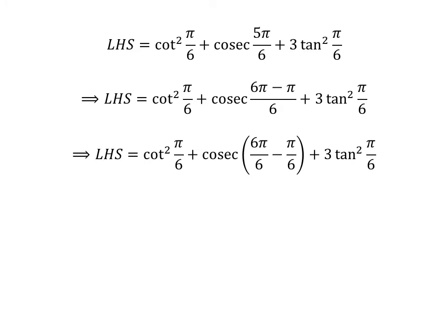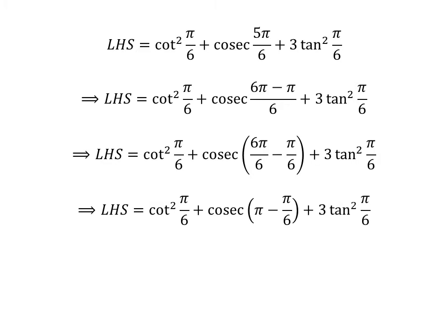We can express the fraction (6π - π)/6 as 6π/6 minus π/6. Cancelling out the common factor 6, we get the left-hand side equal to cot²(π/6) + csc(π - π/6) + 3tan²(π/6).